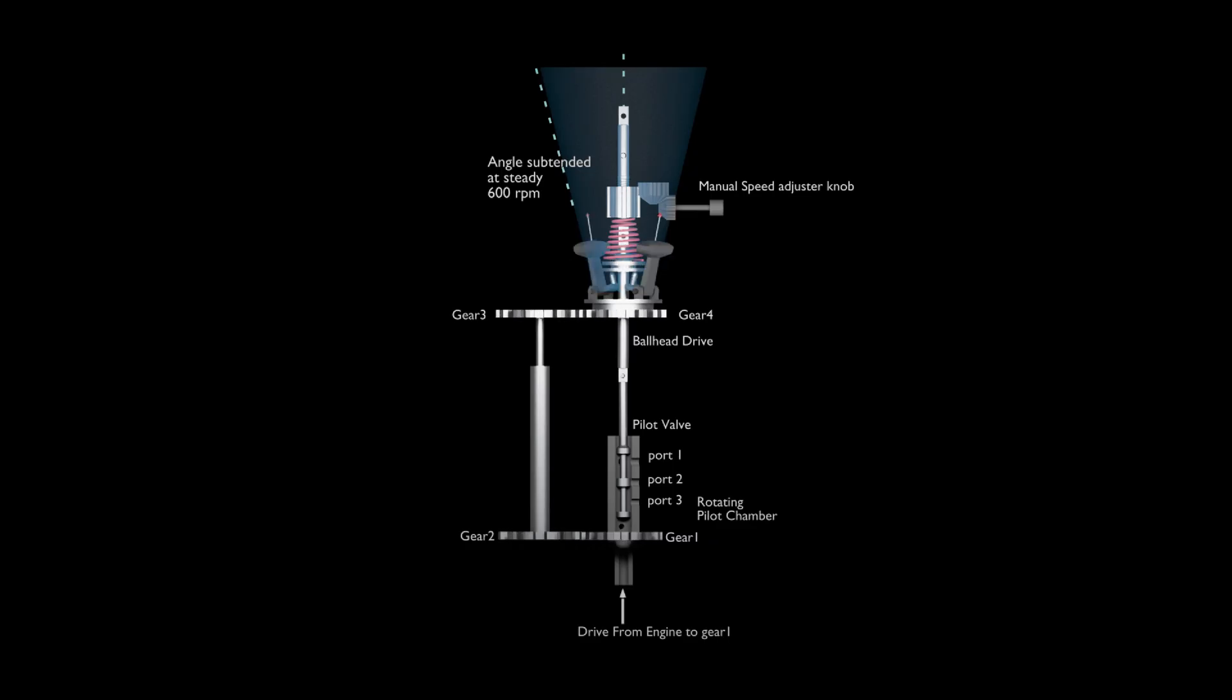As soon as 610 RPM is reached, flyweights move further away from axis, lifts up the pilot valve, this time in opposite direction. Power output shaft of governor moves to lower fuel setting. Again, the cycle of correction starts in opposite direction. This phenomenon is called hunting, hunting about the desired set point.